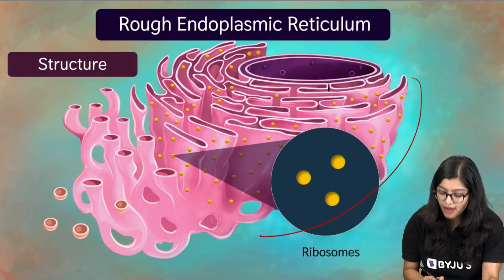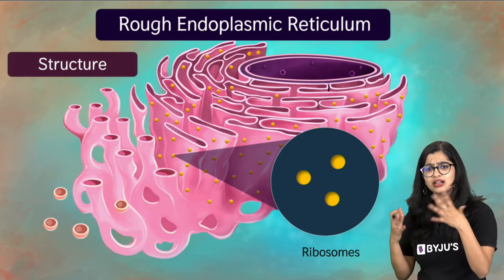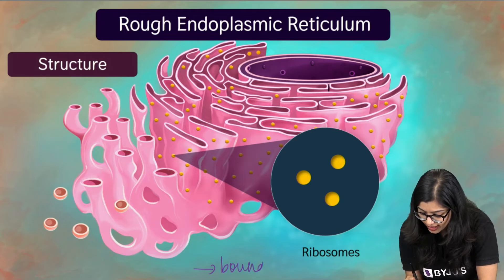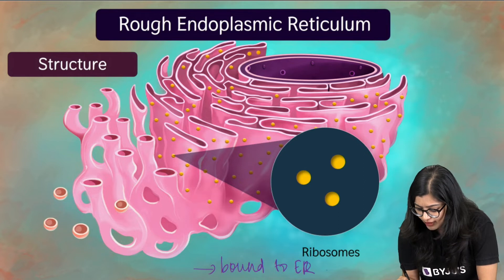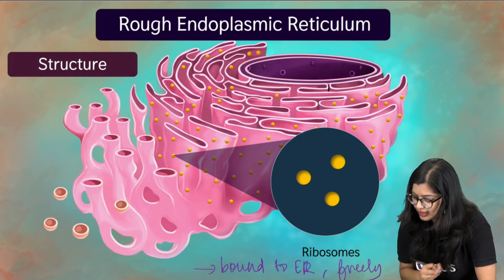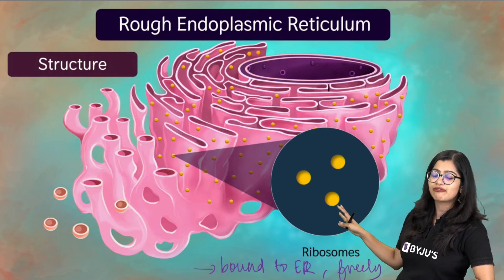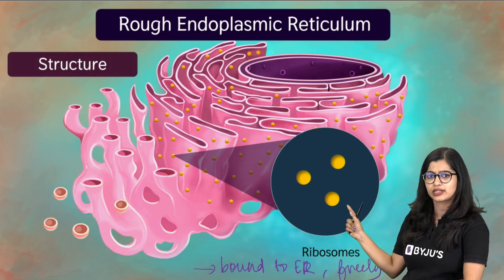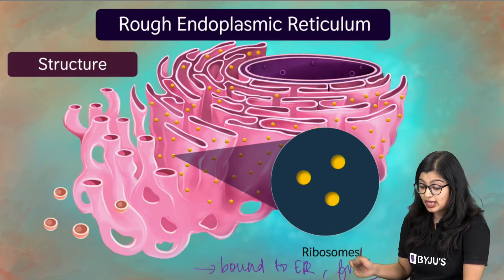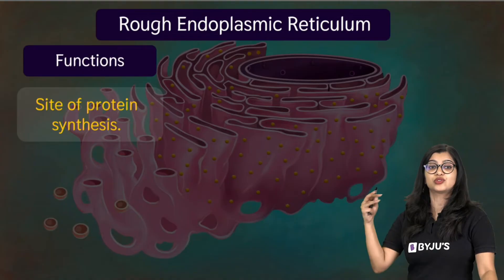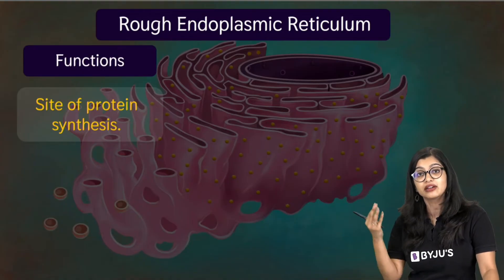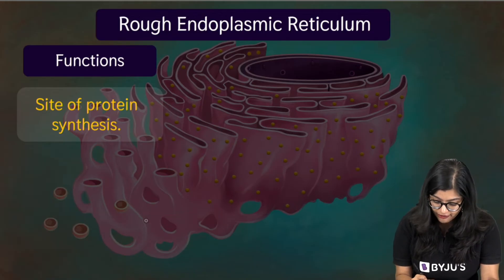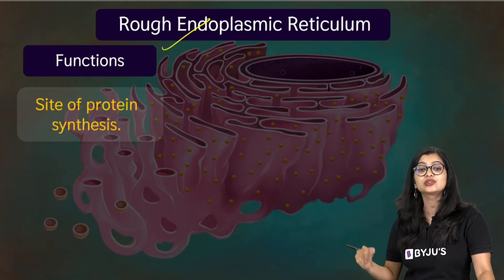Ribosomes are another kind of cell organelle which are either found bound to the surface of the ER or freely floating in the cytoplasm. We find ribosomes in most cells — whether it's a prokaryotic cell or a eukaryotic cell. The important function of the ribosome is to synthesize proteins. They play a key role in protein synthesis, which means the major function of the rough endoplasmic reticulum is to synthesize proteins.